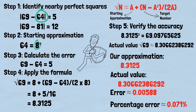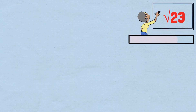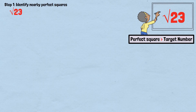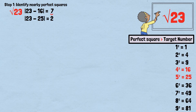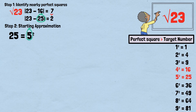Now let's try the square root of 23, which demonstrates how the method handles cases where the nearest perfect square is larger than the target number. Step 1: perfect squares near 23 — 4²=16, 5²=25. Distances: |23−16|=7 and |23−25|=2. Since 2 is less than 7, we use 25 as our closest perfect square.